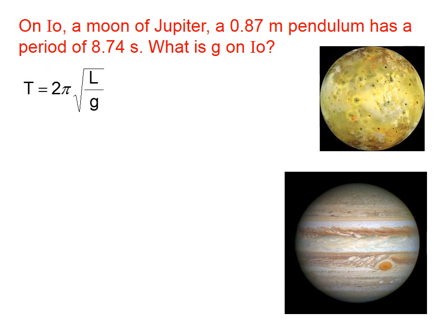So let's use that equation for the period of a pendulum, and we need to solve it for g. In other words, we need to get g by itself, and right now g is buried underneath the L and underneath this square root sign.